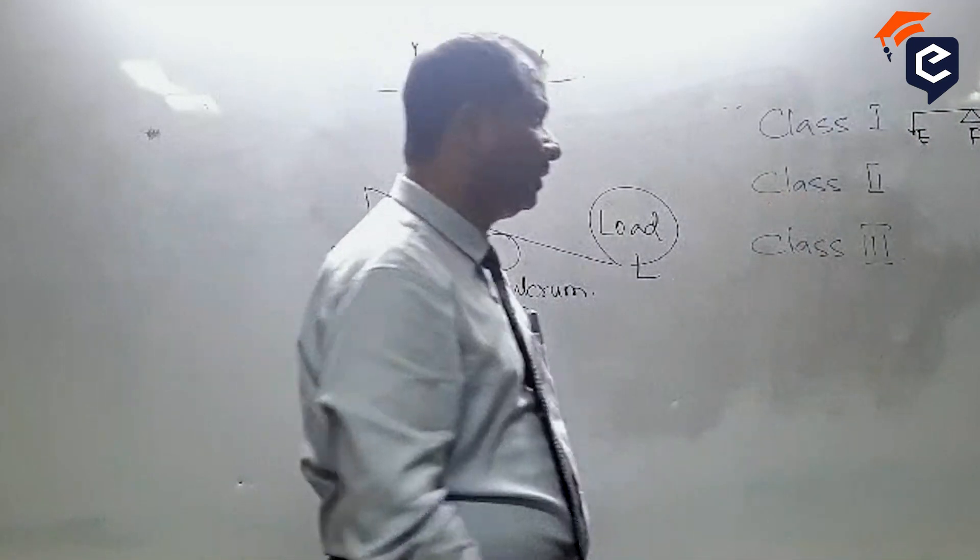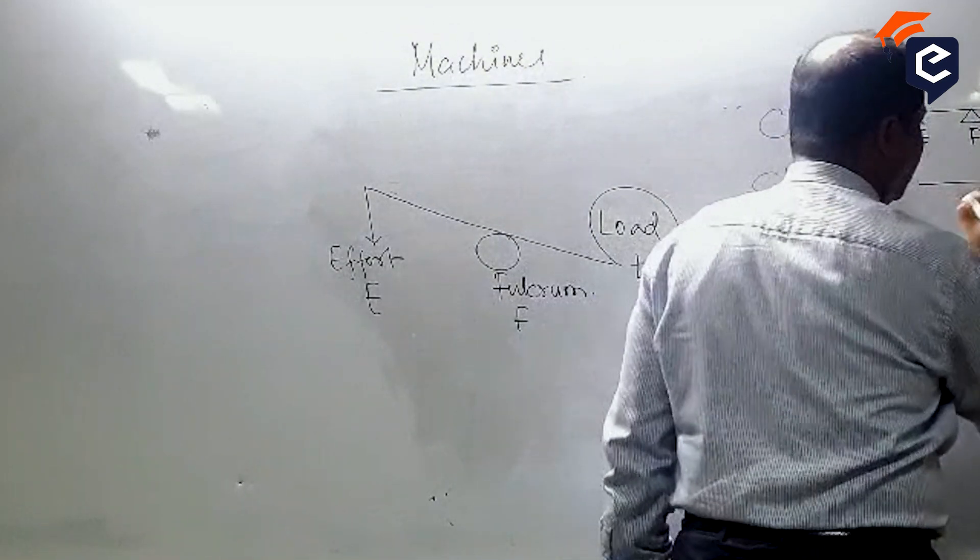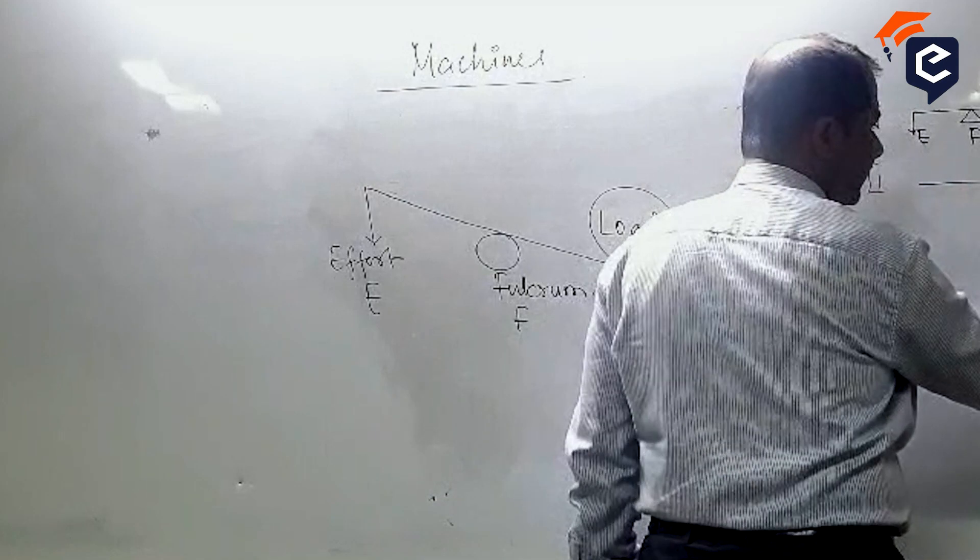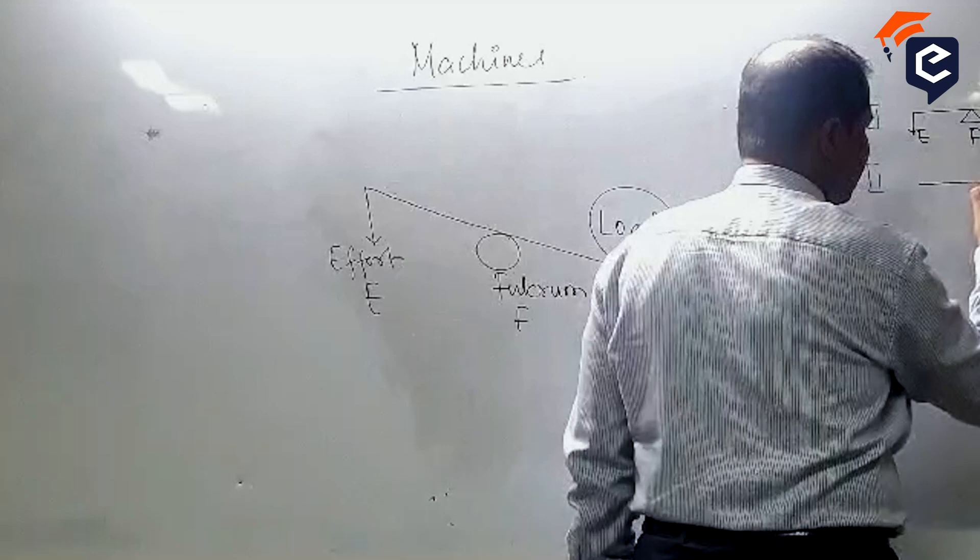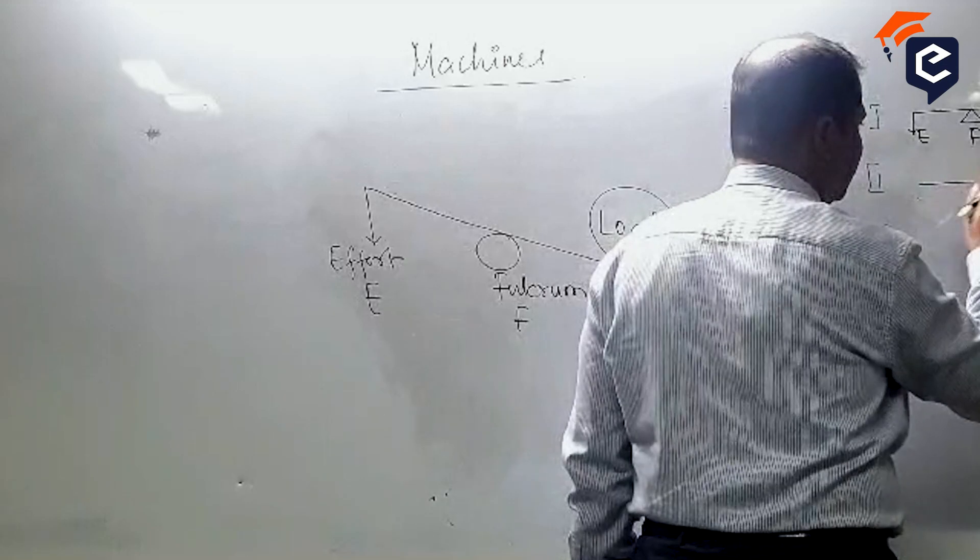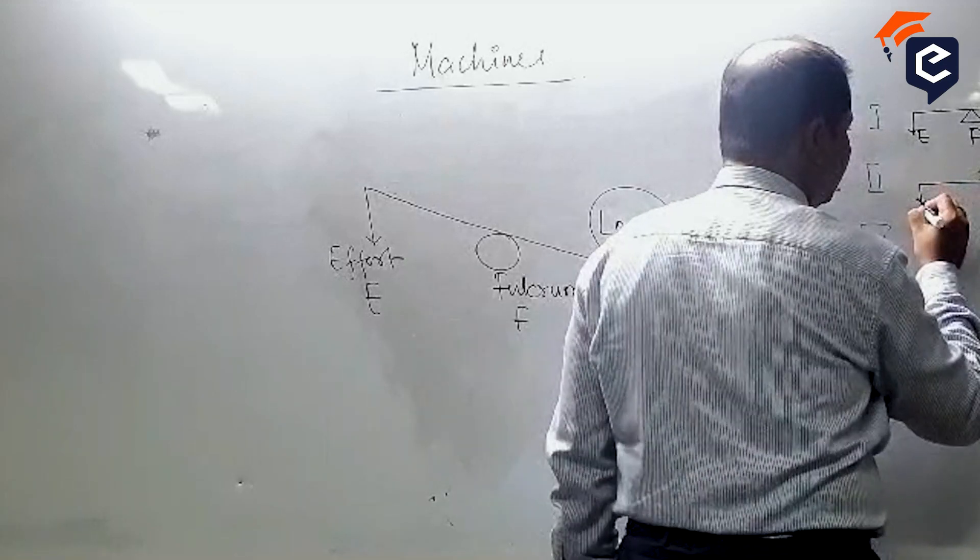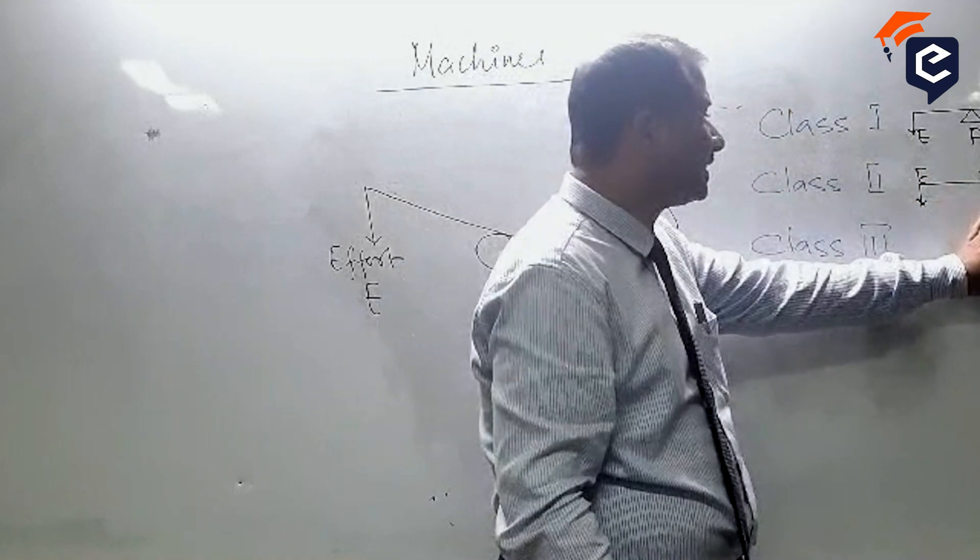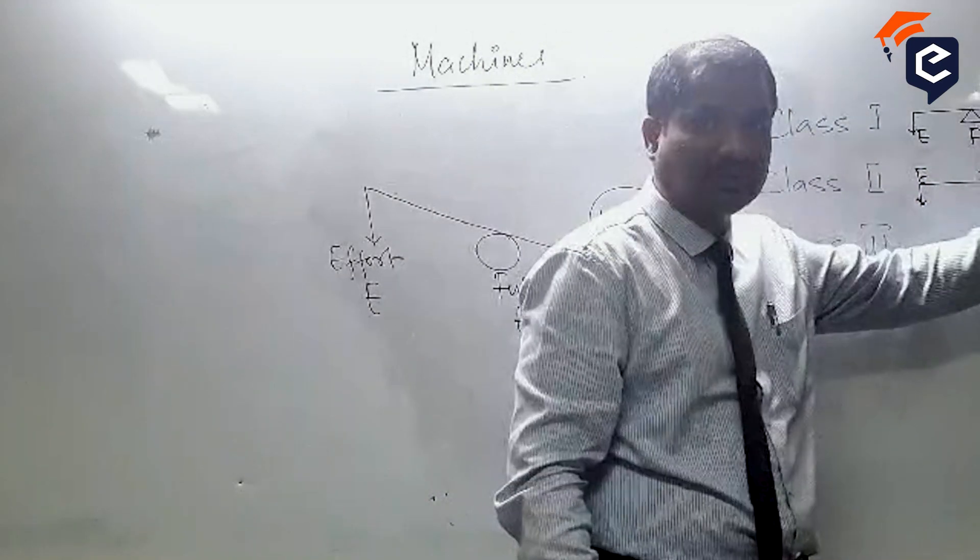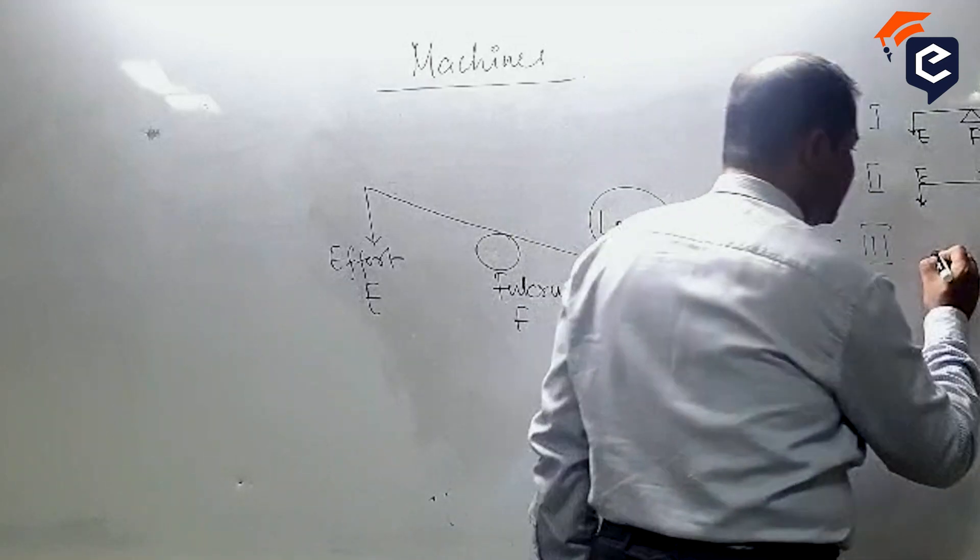Class 2: the fulcrum is here, the load is here, and the effort is here. That means the load is in between the effort and fulcrum. What is Class 3?